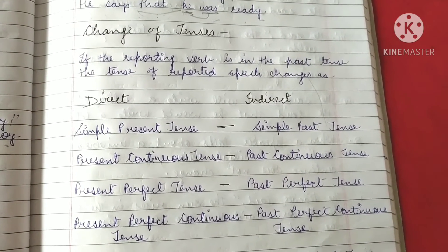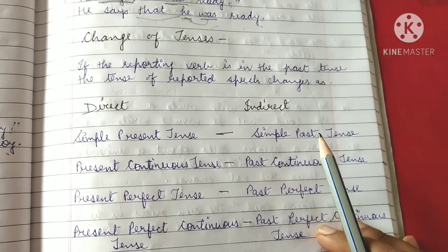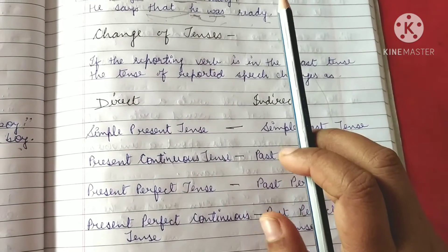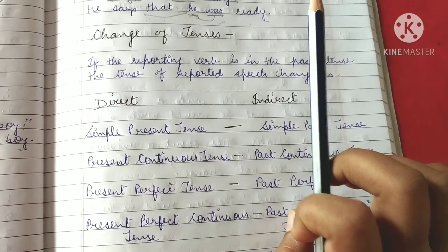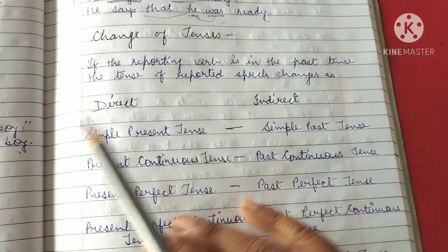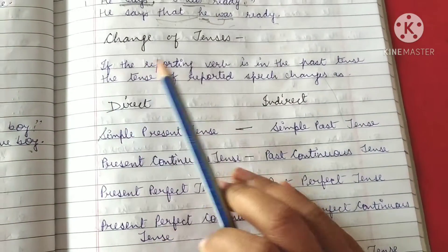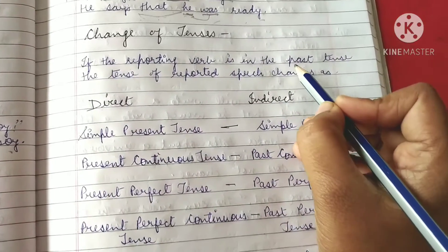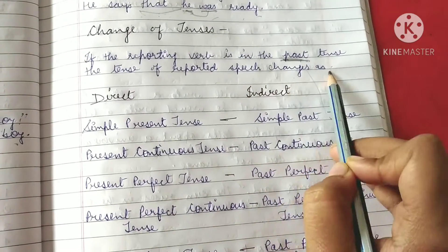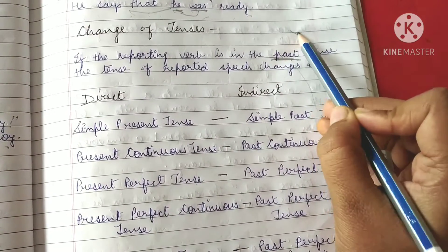Hello children. In the previous video, I've explained change of reporting verb and change of pronoun. Now I'm going to explain change of tenses. In the previous video I've told you that if the reporting verb is in the present tense or future tense, then we don't change the tense of reported speech.